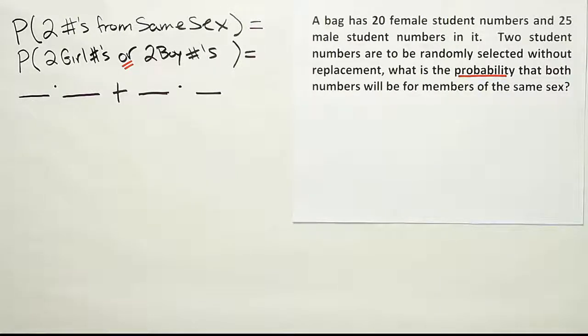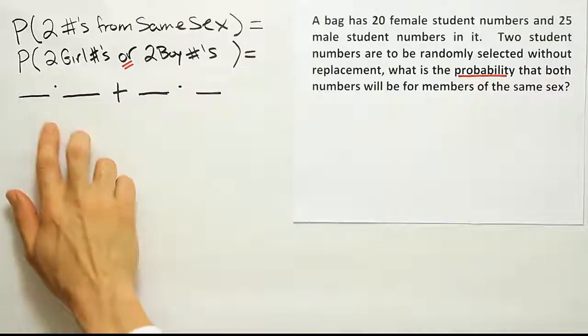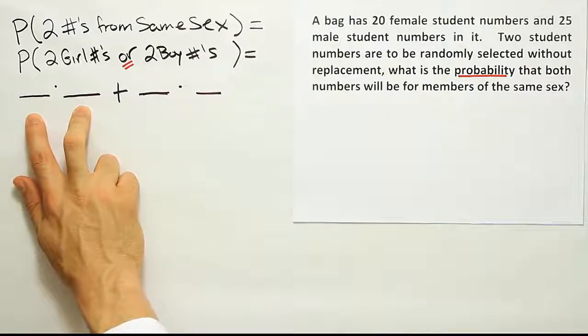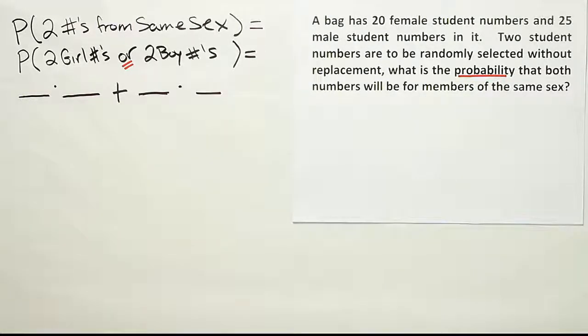Okay, so we don't have to worry about subtracting anything off or not double counting or anything. We'll just do the probability that it's two girls added to the probability it's two boys and that will finish the problem. Okay, well, that's really the hard part. The rest is pretty easy. The rest is just filling in the numbers.